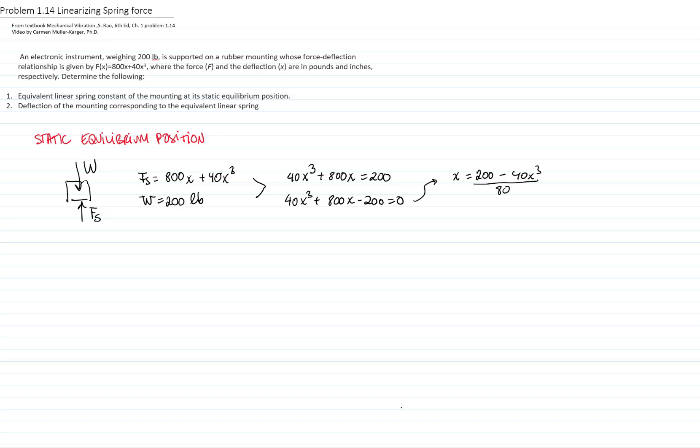Then I plug in one x over here, and I get one x over there, and do recursive iterations to get the root for my polynomial. In this case, I get that x equals 0.249 inches. The two other roots are complex numbers. Therefore, this is our static equilibrium position.